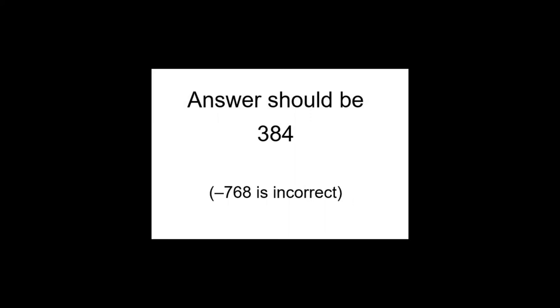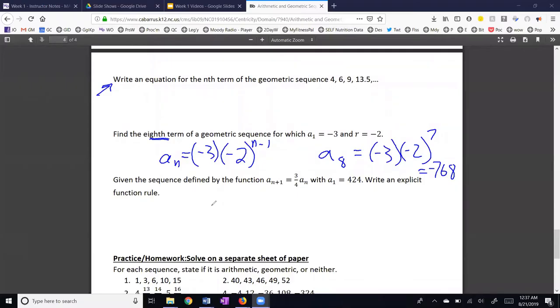In the next question, we are given a recursive formula and we are supposed to state the explicit formula. An is equal to the first term which is 424 times our common ratio which is 3 fourths raised to the n minus 1 power.